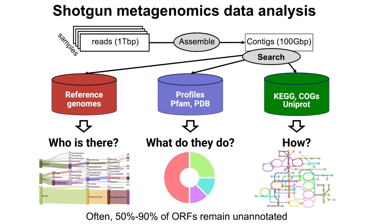Or we can search against metabolic pathway databases and figure out how these microbes carry out their functionality. One problem is that everything is based on search, and you have to find something in order to get value out of these metagenomes. For some environmental metagenomes, we can barely annotate any of the open reading frames from these contigs.